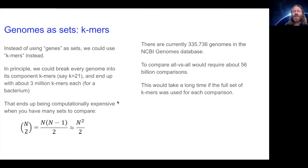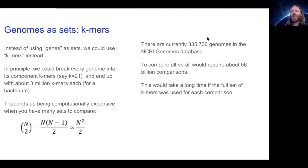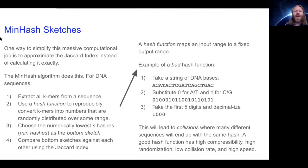Whenever you do all-versus-all comparisons, you have to be really careful about the algorithm you use, because it scales with the square of the number of genomes. If you're doing 1,000 times 1,000, that's a million sets to compare, divided by two — 500,000. If we wanted to compare all genomes in the NCBI genomes database — about 335,000 at the moment — that would be about 56 billion comparisons. If you can speed up each of those by 5 or 10 fold, you'll make a real dent in the computation.